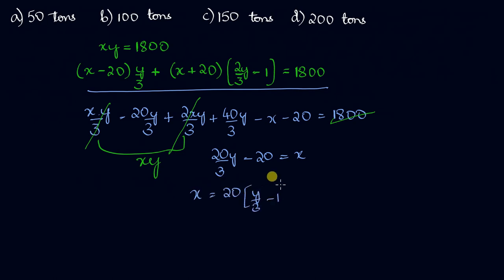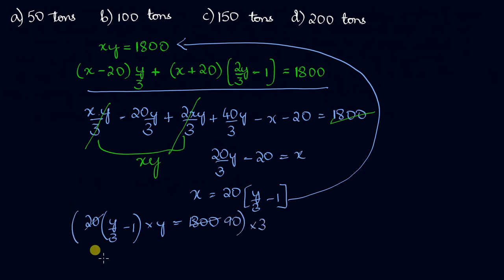Now let's plug that in the first equation. 20 times y by 3 minus 1 times y equals 1800. Now this 20 goes with 1800, 90 times, and we'll multiply the whole thing by 3. We'll get y squared minus 3y equals 270. I'll write minus 270 equals 0.